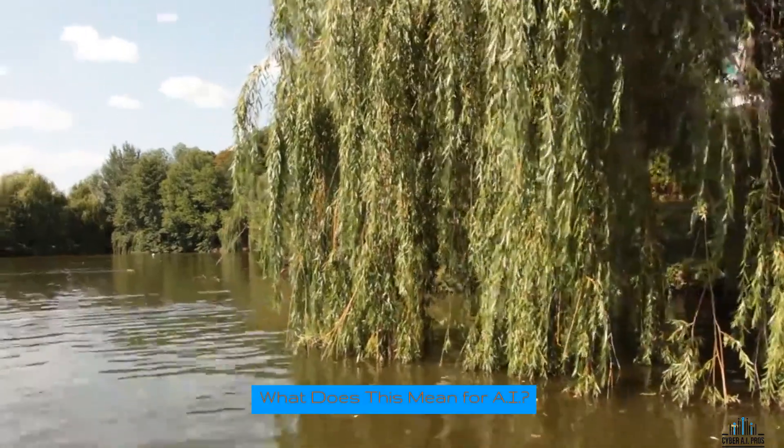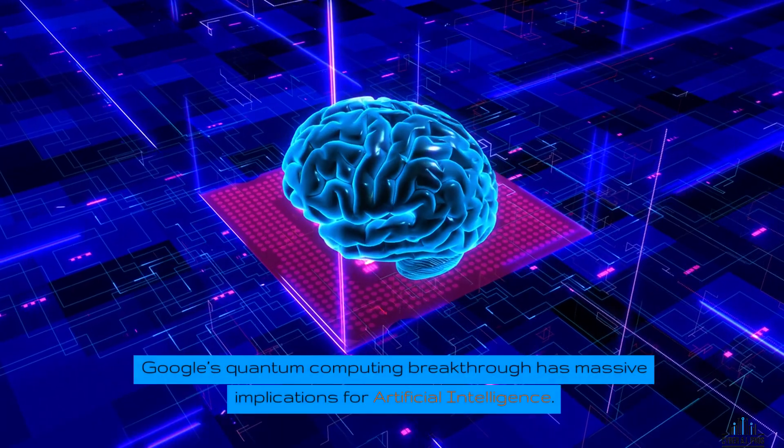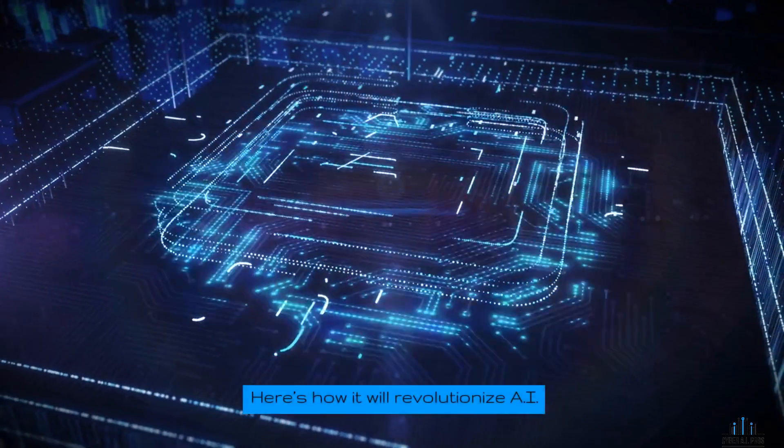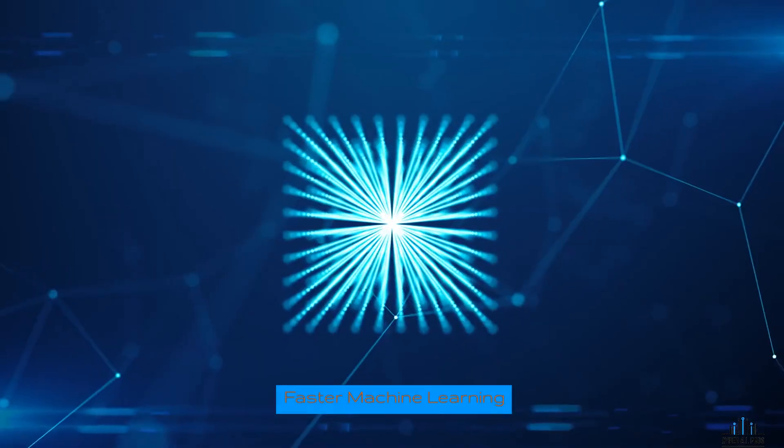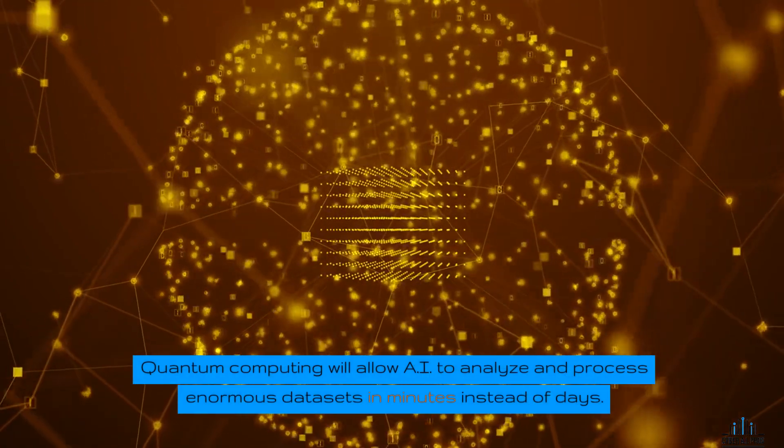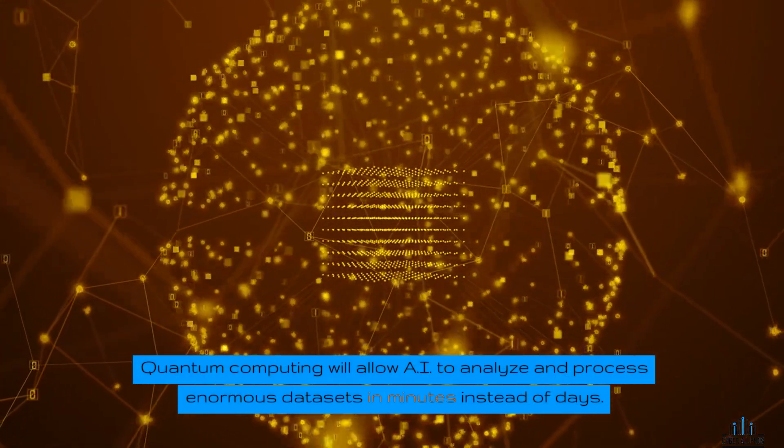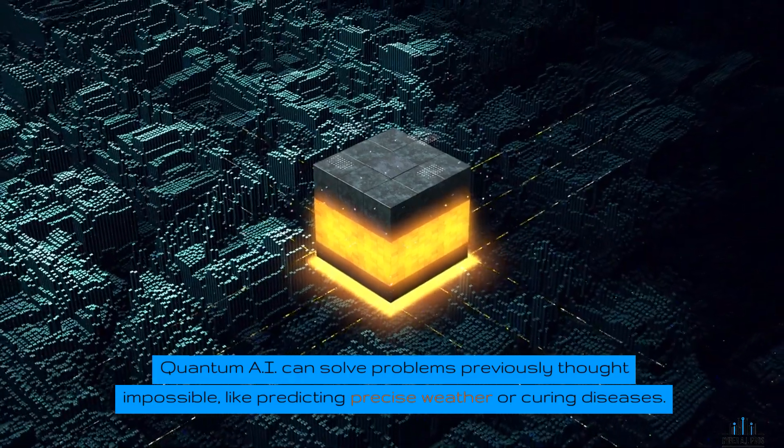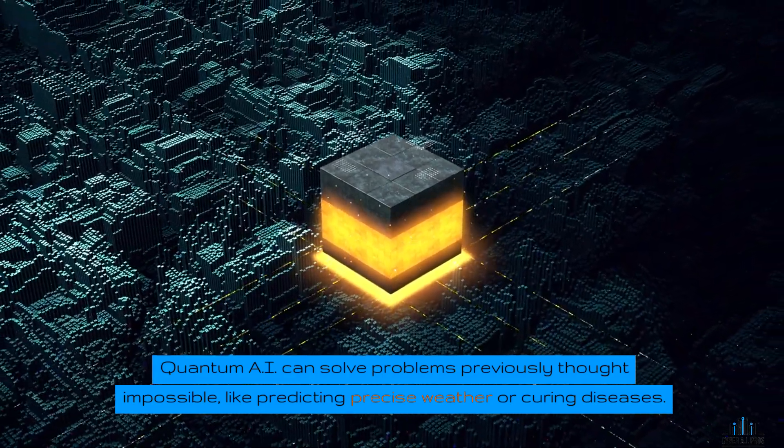What does this mean for AI? Google's quantum computing breakthrough has massive implications for artificial intelligence. Here's how it will revolutionize AI. Faster machine learning: Quantum computing will allow AI to analyze and process enormous data sets in minutes instead of days. Complex problem solving: Quantum AI can solve problems previously thought impossible, like predicting precise weather or curing diseases.